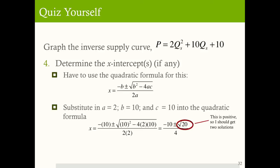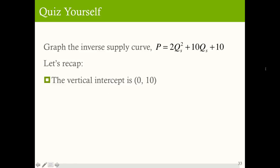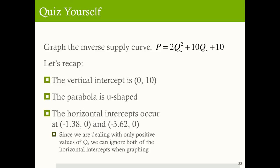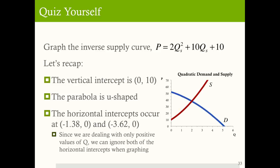Now let's determine the x-intercepts using the quadratic formula. Substituting a, b, and c, I come up with negative 10 plus or minus the square root of 20, divided by 4. Because 20 is positive, I should come out with two solutions — the supply curve should cross the horizontal axis at two points. The first root gives negative 1.38, and the second gives negative 3.62. Since we're only dealing with positive values of q, we can ignore both of these horizontal intercepts. The vertical intercept is 10, the parabola is u-shaped, and this is what your supply curve should look like in quadrant 1.